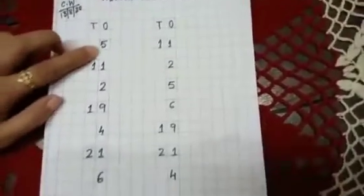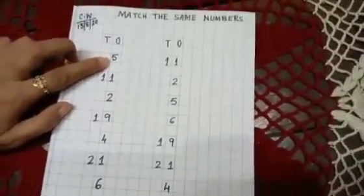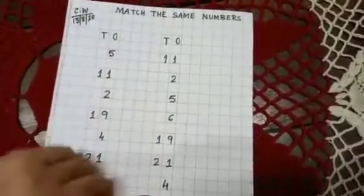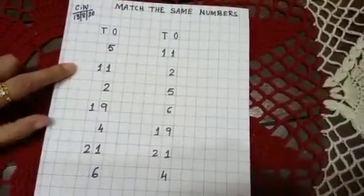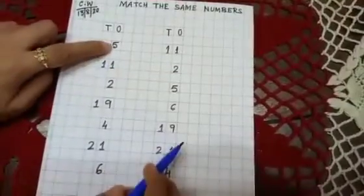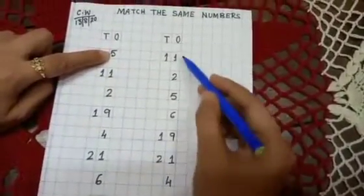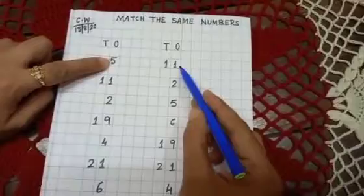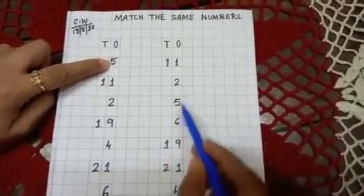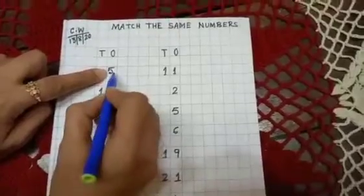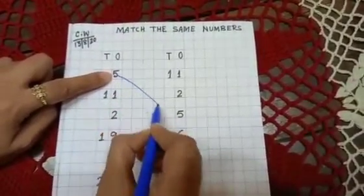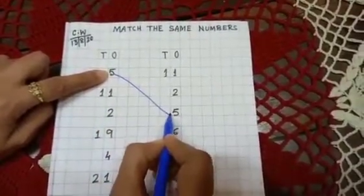Now start doing the matching. Find out the first number — it is five. Here you have to find where five is, so match five with five. Read the other side: eleven, two, then five — so five is here. Just draw a line.